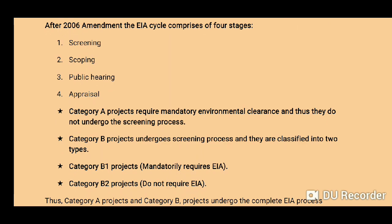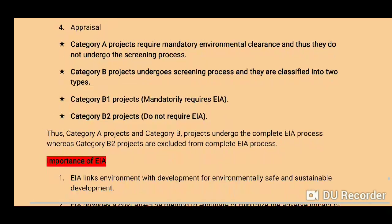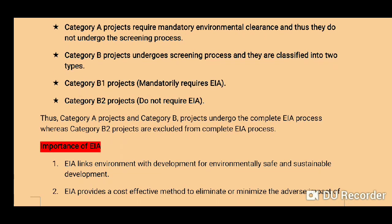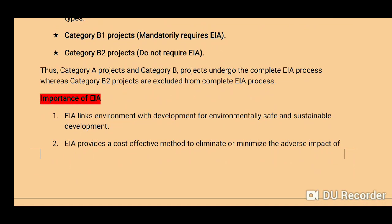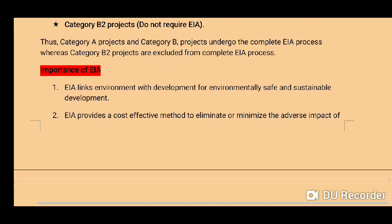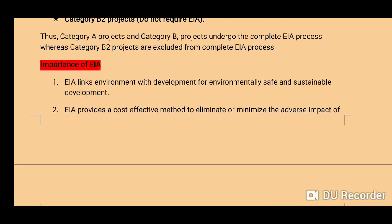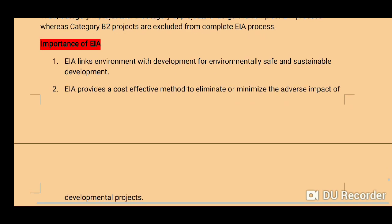After the 2006 amendment, the EIA cycle comprises four stages: screening, scoping, public hearing, and appraisal. Important points: Category A projects require mandatory environmental clearance and do not undergo the screening process. Category B projects undergo screening and are classified into B1 — which mandatorily requires EIA — and B2 — which does not require EIA. Thus, Category A and B1 projects undergo the complete EIA process, whereas Category B2 projects are excluded.